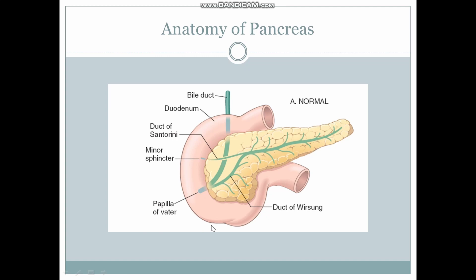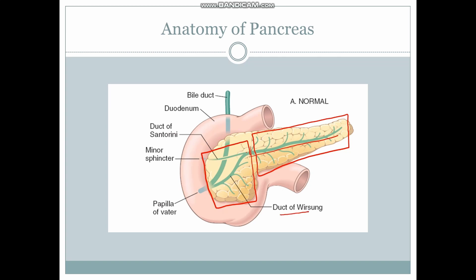The pancreas is a retroperitoneal organ, which means it is situated behind the peritoneum. The main pancreatic duct drains the body and tail of the pancreas. The head of the pancreas is drained by the duct of Wirsung. The main pancreatic duct divides into two parts: one is the duct of Santorini, and the other joins with the duct of Wirsung. The duct of Santorini drains into the second part of the duodenum through a minor sphincter, which has a very small caliber.